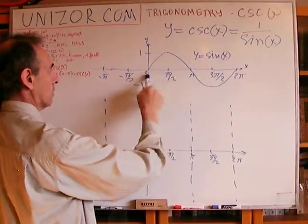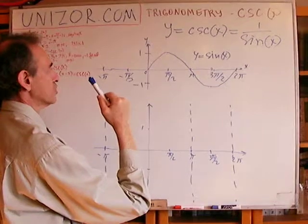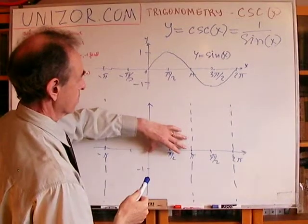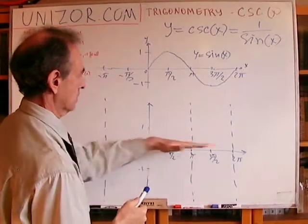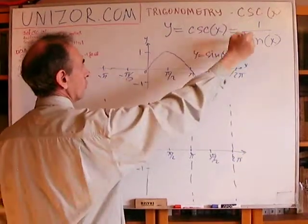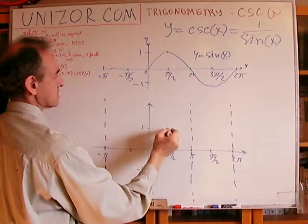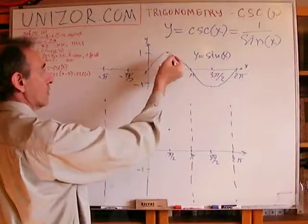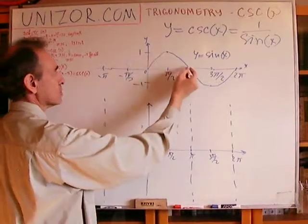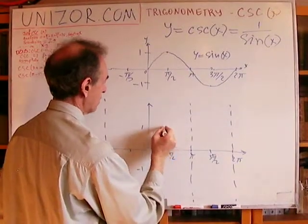From 0 to π, not including the edges of this interval, the graph is positive, which means 1 over sine will also be positive. In this particular area from 0 to π, the graph will be above the x-axis. At point π/2, it's 1. 1 over 1 is still 1, so we still have this point. After which, if we go to the left or right from this point, sine is decreasing to 0, which means 1 over sine will be increasing to infinity, positive infinity, so the graph will go this way.